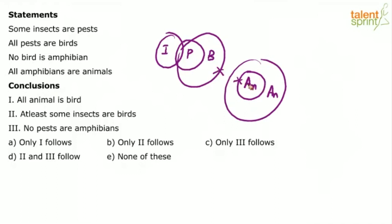Now look at the conclusions. First one: all animals are birds. Is it possible for all animals to be birds? Not possible. If all animals have to become birds, all animals should come inside birds. But then amphibians — which are always inside animals — will also go inside birds. However, the statements clearly say that birds and amphibians should not overlap. So 'all animals are birds' is a wrong conclusion.